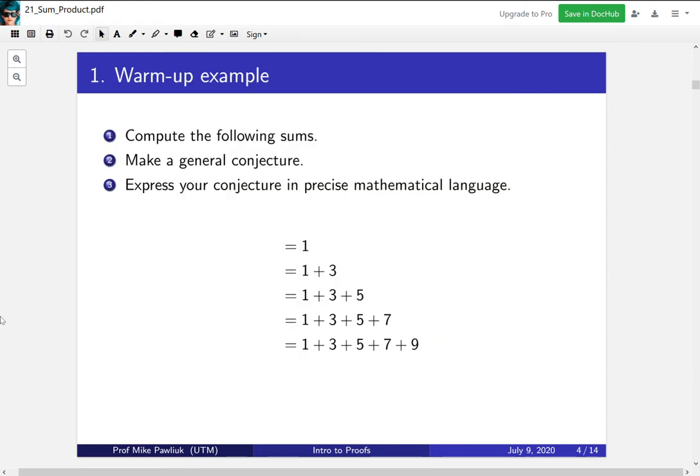As a warm-up example, compute the following five sums, then make a general conjecture about how the sums relate to the things you're adding, and then express your conjecture in a precise mathematical language. Please pause the video now and take a moment to do this.